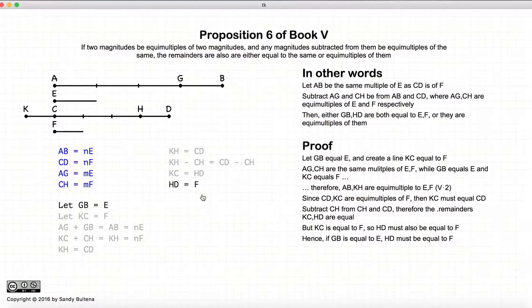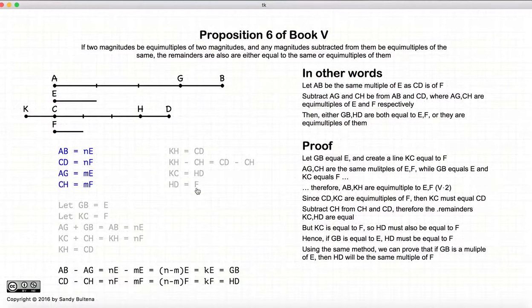Now we can use all of these same arguments where instead of assuming that GB is equal to E, GB is equal to some multiple of E. Then we draw KC is equal to the same multiple of F and go through the same arguments. And we will end up demonstrating that GB and HD will be equal multiples of E and F. Same logic as before.